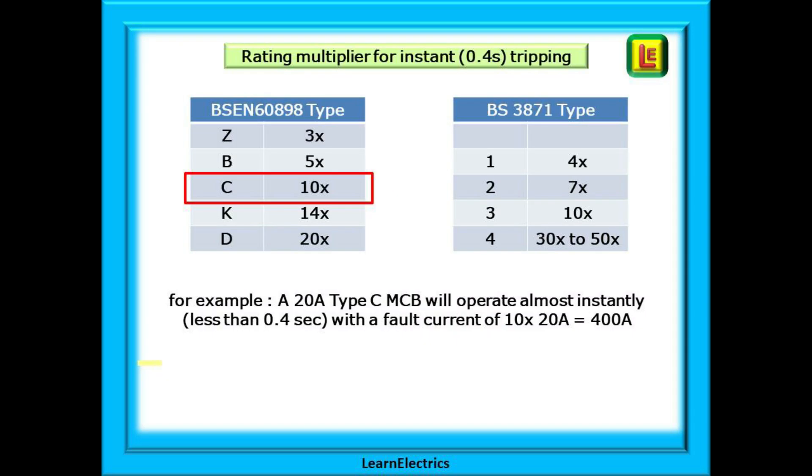The type number is actually a rating multiplier that tells us how quickly the device will do two things: how it will respond to real faults and how it will buffer itself against nuisance or startup tripping. Look at these two tables shown here. We've included the types Z and K but most often it will be types B, C and D that you come across. The B type will trip within 0.4 seconds if a short or fault current of 5 times its rating is detected. The type C will respond to the current of 10 times its rating and so on.